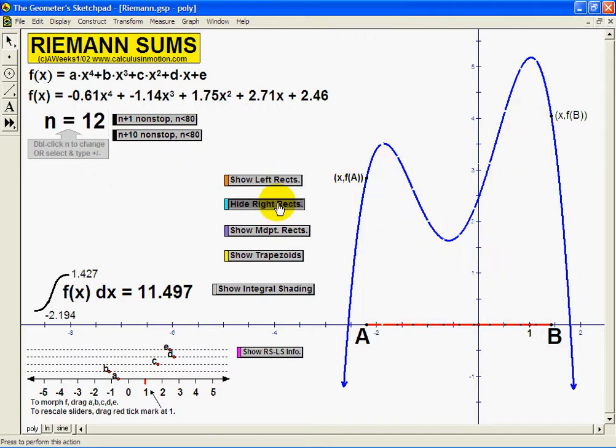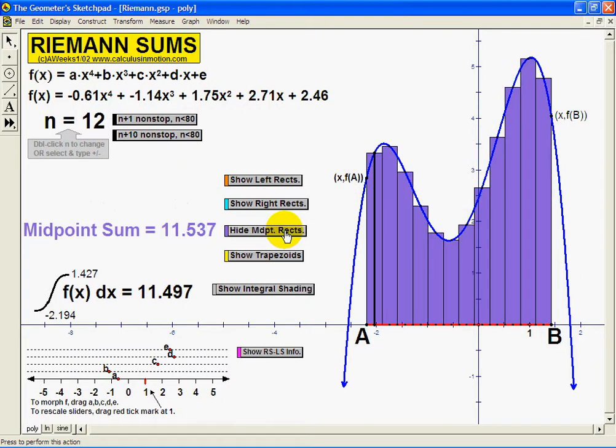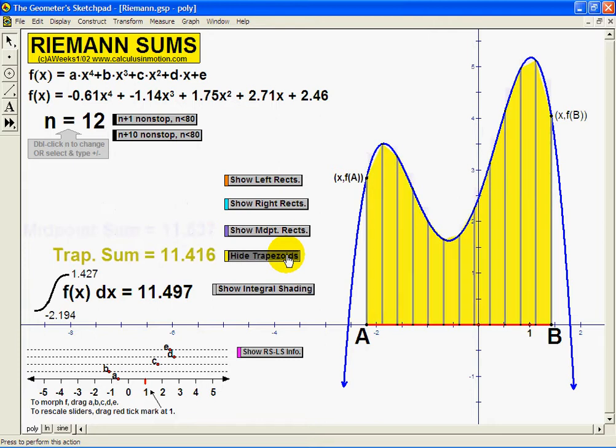Rectangles for left sums, right sums, or midpoints can be used, as well as trapezoids for the trapezoidal rule.